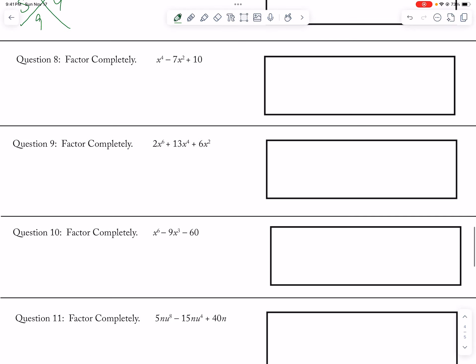Number 9, everything is not divisible by 2, but if you factor out an x squared, so 2x to the 4th plus 13x squared plus 6. So 12 and 13, 1 and 12, so then x squared, x plus 1 over 2, and then x squared plus 12 over 2. So then I get x squared, 2x squared plus 1, and x squared plus 6.